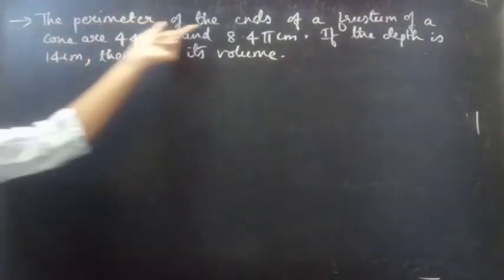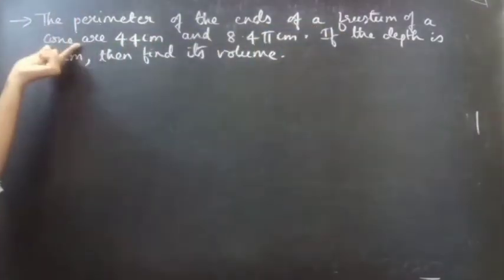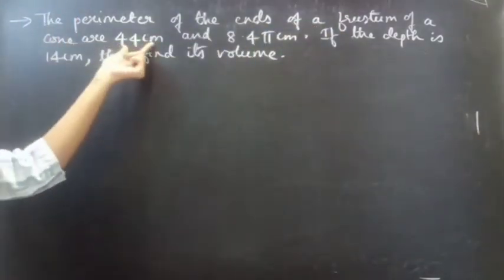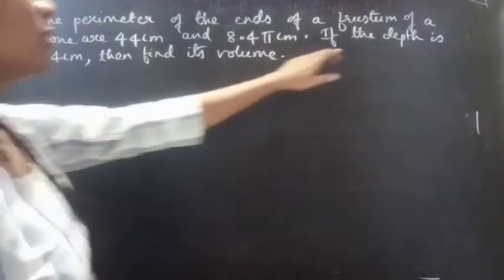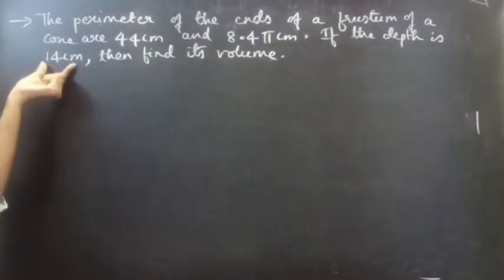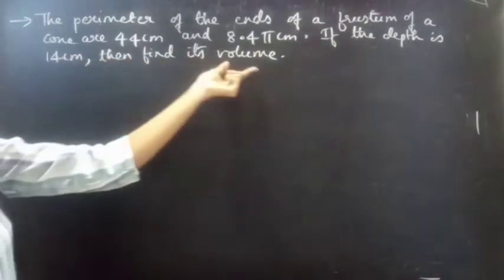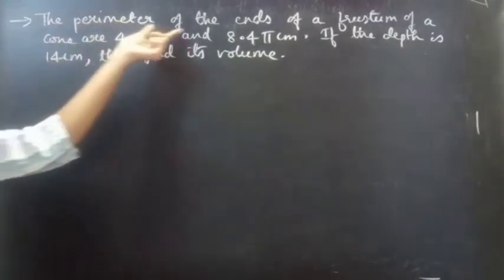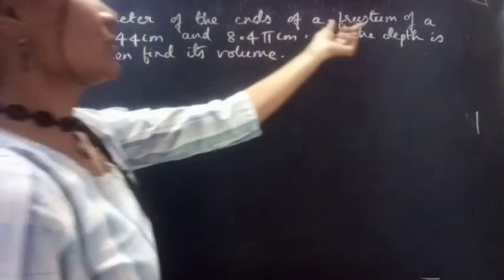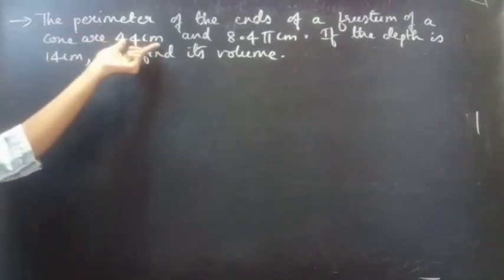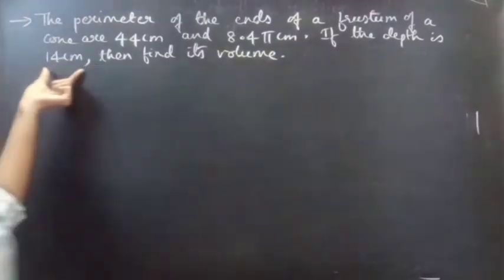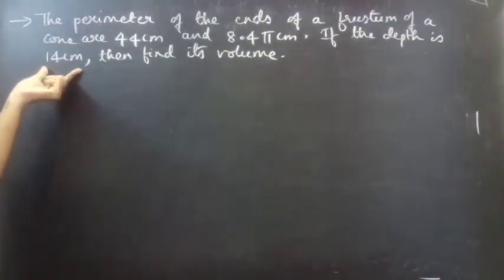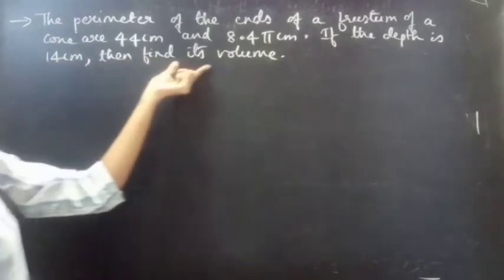Problem: the perimeter of the ends of a frustum of a cone are 44 cm and 8.4π cm. If the depth is 14 cm — that is, if the height of the frustum is 14 cm — then find its volume.